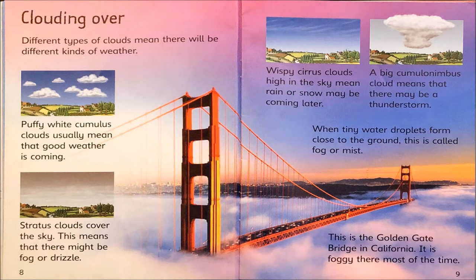What is the main idea of this page? That there are many different types of clouds. What are some details that the author includes to elaborate on this main idea? Well, the author named and described a bunch of clouds: stratus clouds, cumulus clouds, cirrus and cumulonimbus clouds, even fog and mist.